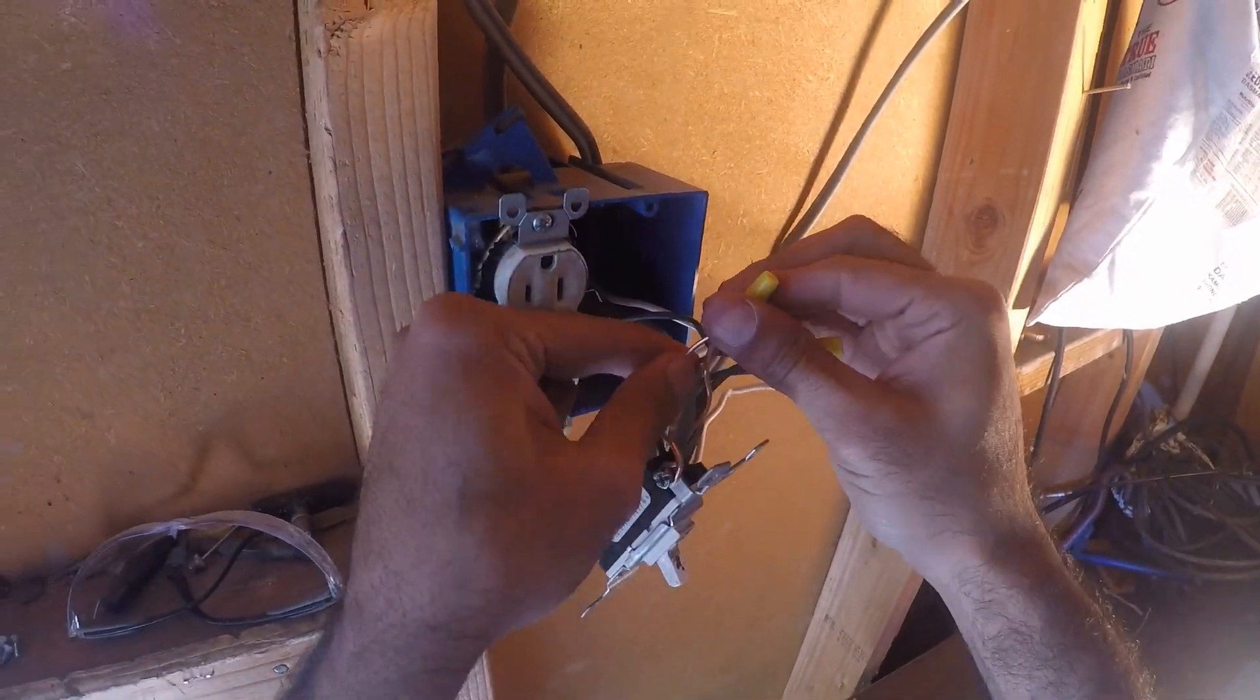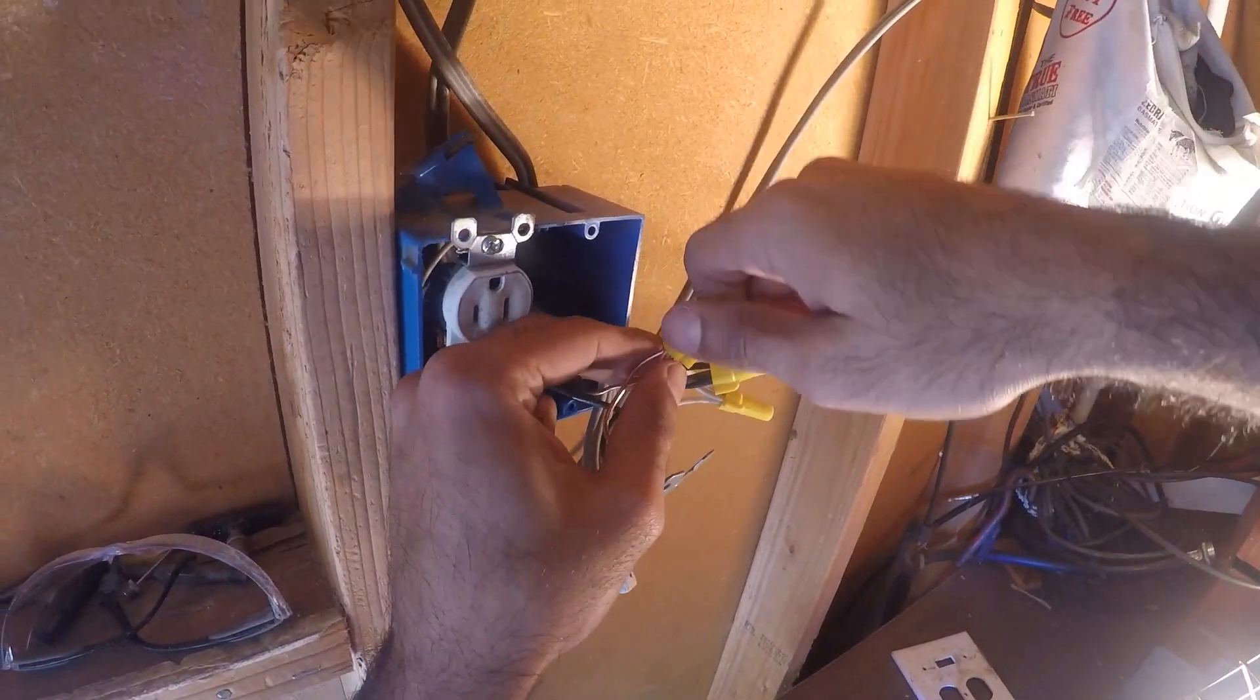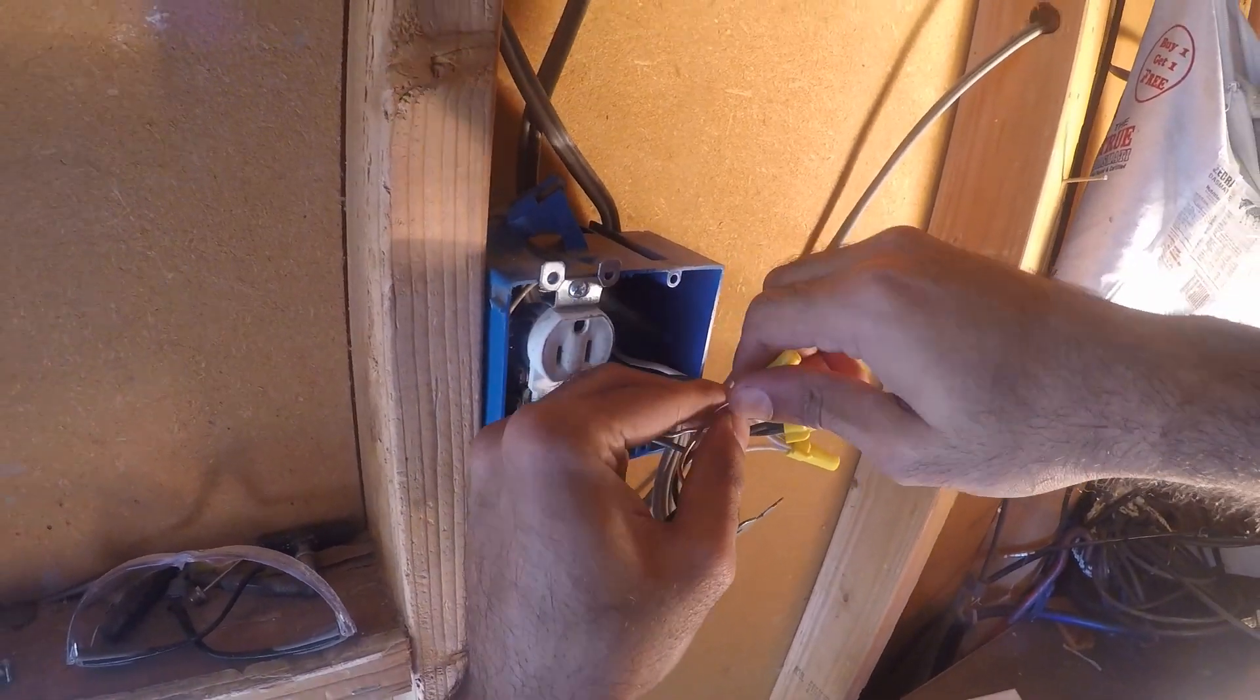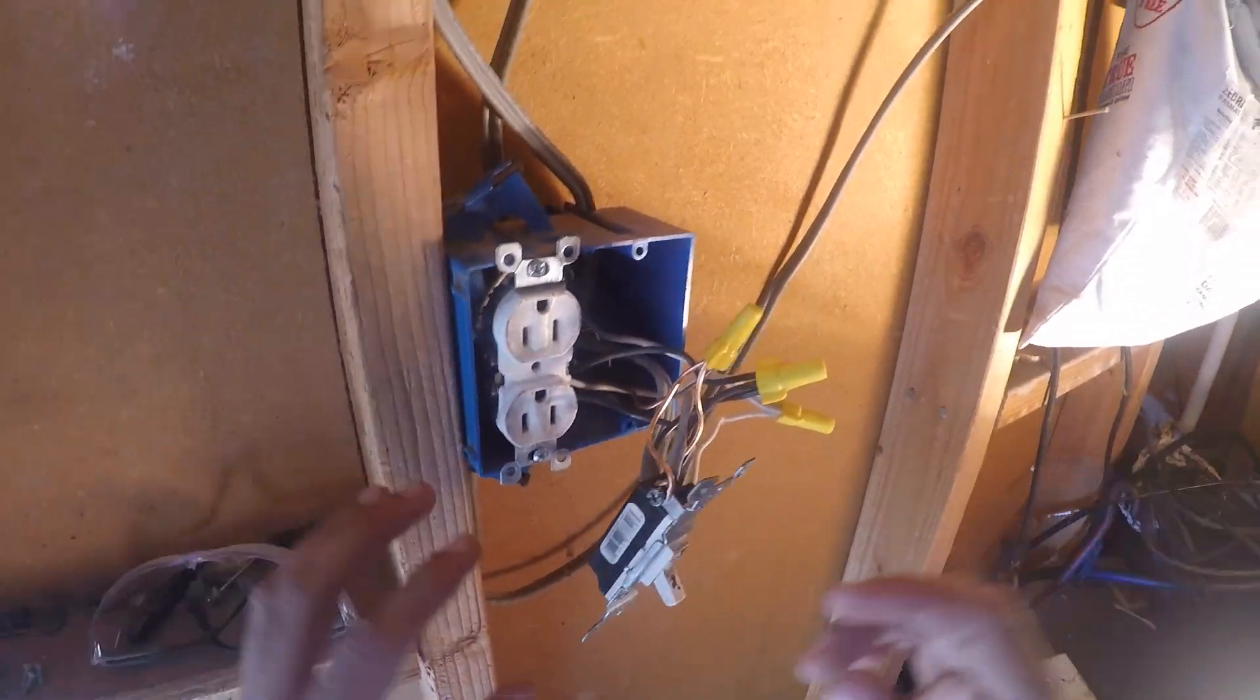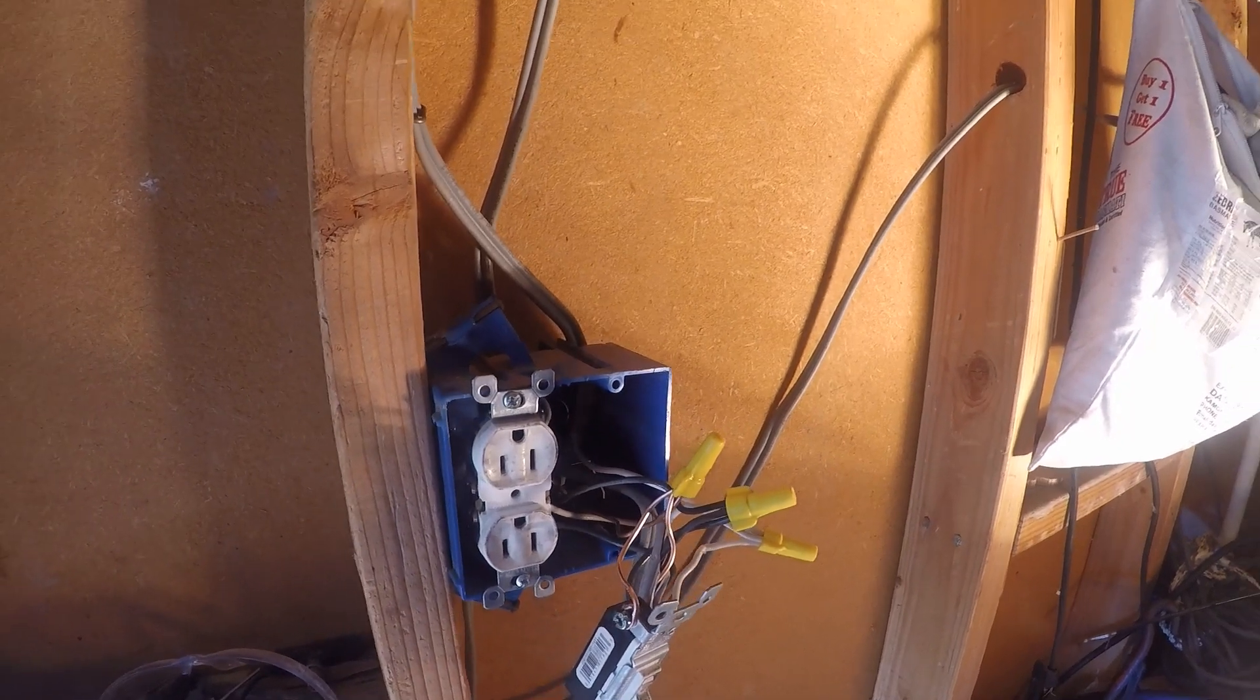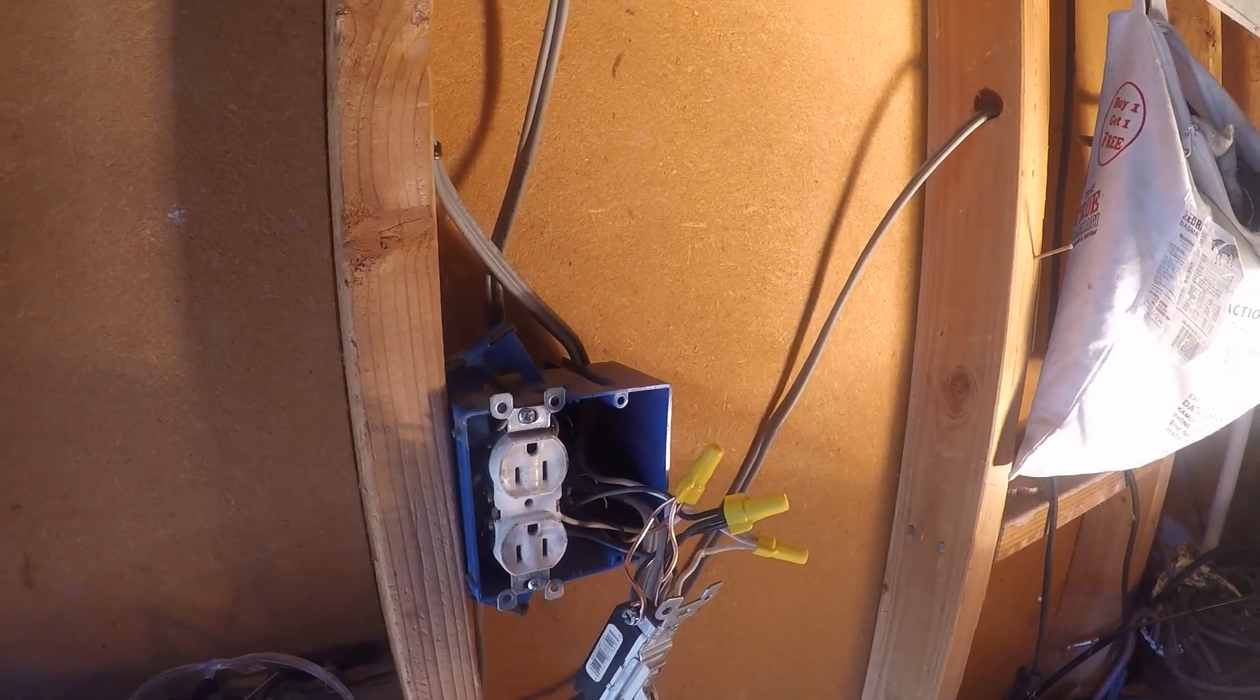It's nice and tight. So we've got the neutral, the power going out of the switch, and the ground wrapped around a wire nut. And now we're just going to push these wires back into the box and just put the screws back in.